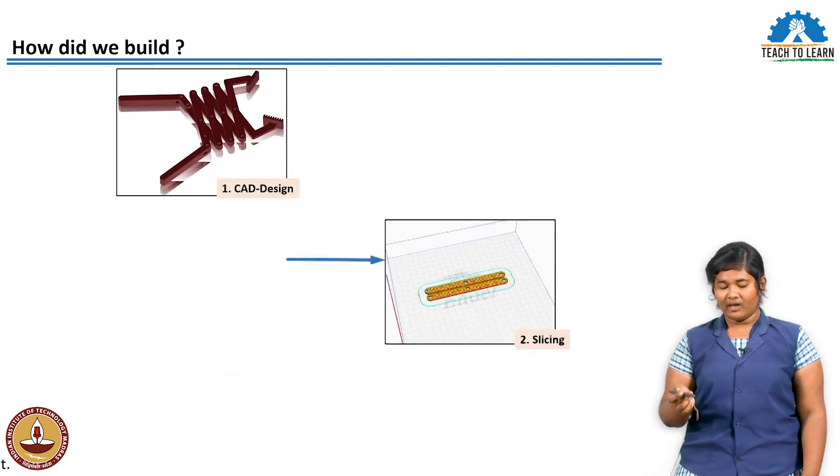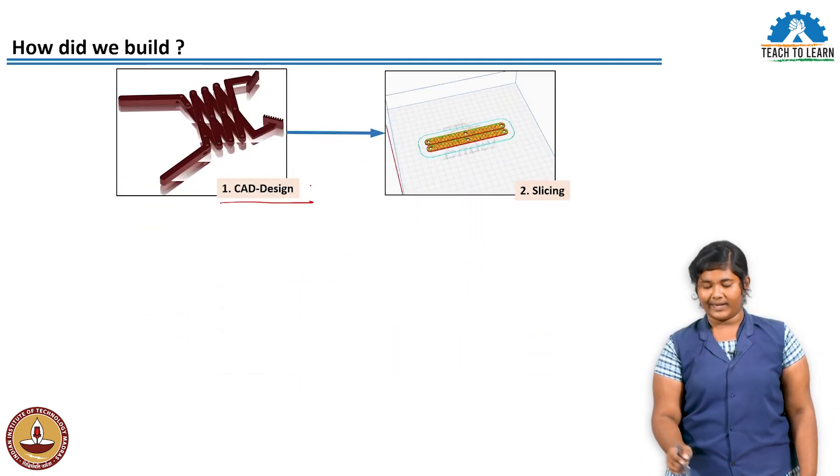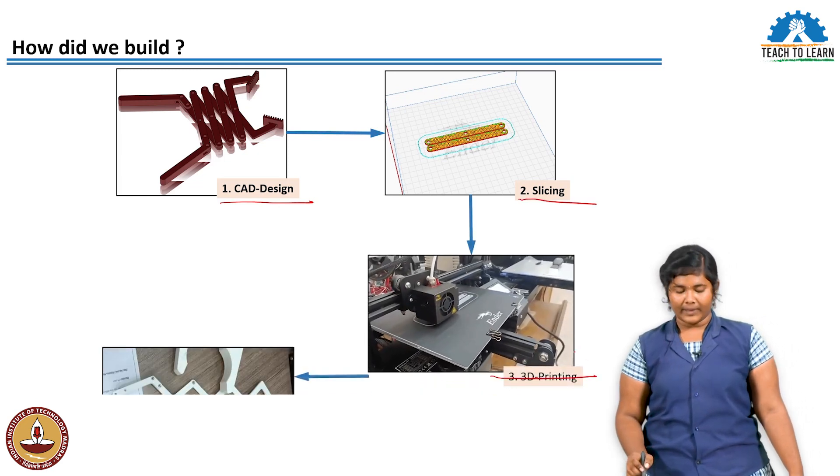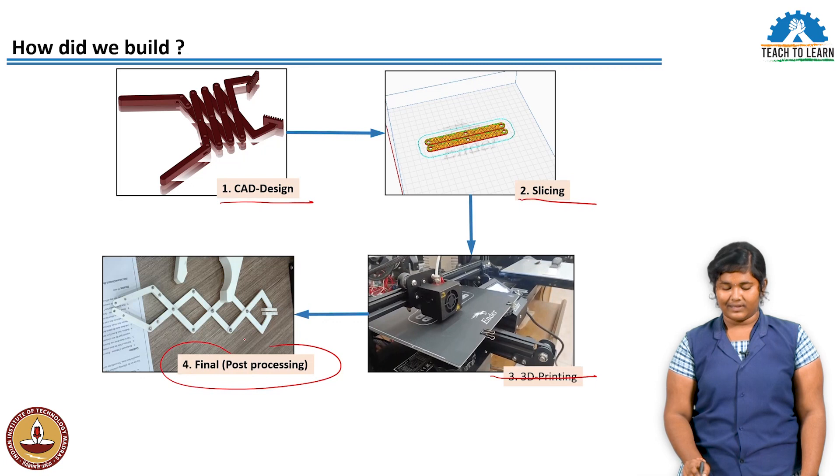To summarize the printing process: first, CAD design; next, Cura slicer; then 3D printer printing; and finally post-processing. This is how to 3D print.